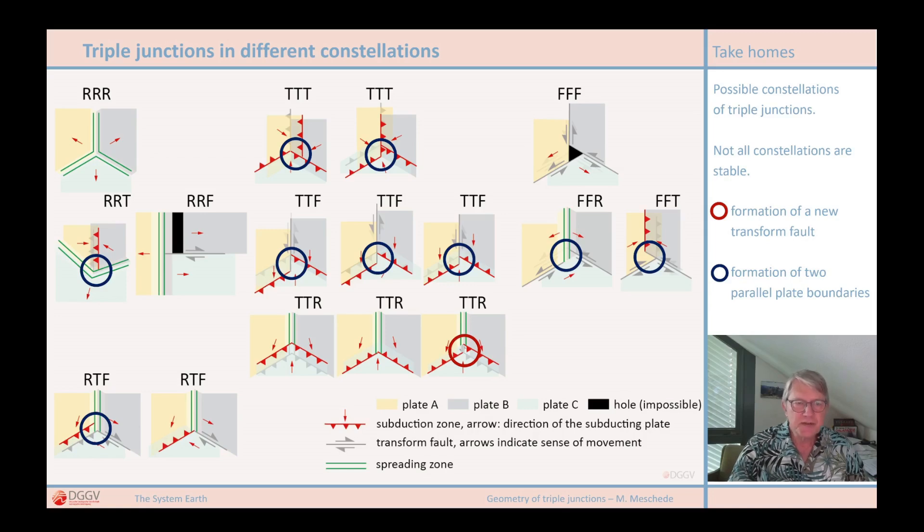In all of the situations that I have now highlighted here with the circles, a constellation ultimately arises in which two of the three plate boundaries end up being parallel to each other.